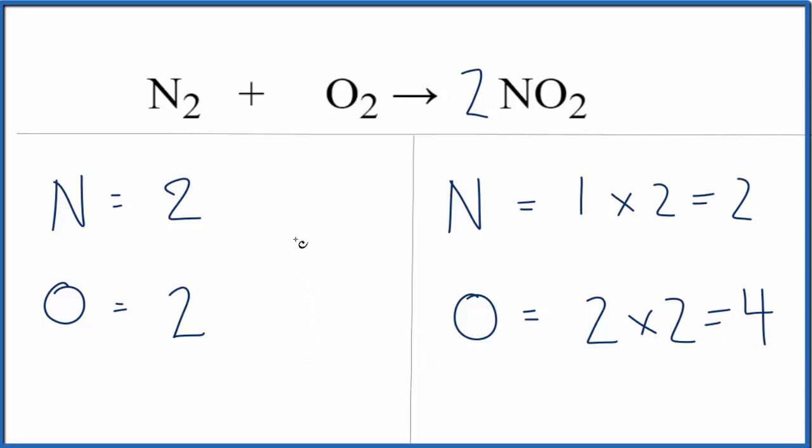Pretty easy to fix, though, because we can put a coefficient of 2 in front of the O2, and 2 times 2 equals 4, and now those are the same.